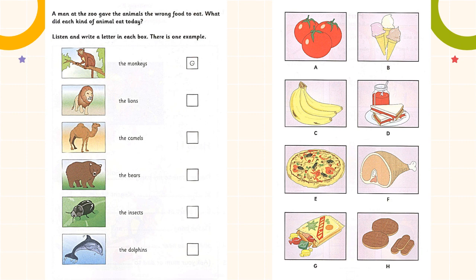The insects at the zoo usually eat leaves — they love those. But the new man gave them fruit today, some old bananas. He cut them into pieces and put them in their cages. They didn't eat much.